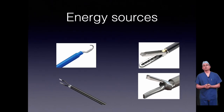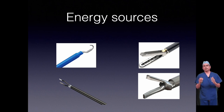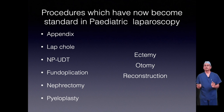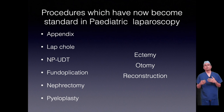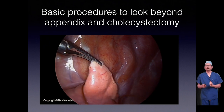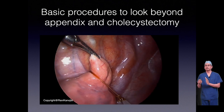Energy sources are an entire chapter in themselves. Whatever energy sources you have, you should have a mental walk-through of at what stage you will be using your energy source and whether it is ready. There are now many procedures that have become the standard of care in pediatric laparoscopy: appendectomy, laparoscopic cholecystectomy, non-palpable UDT, fundoplication, nephrectomy, pyeloplasty — these are procedures where parents will come demanding laparoscopic options. Follow the evolutionary steps of ectomy, otomy, and reconstruction. There are also smaller procedures that help train for all aspects of laparoscopy beyond the actual procedure itself.